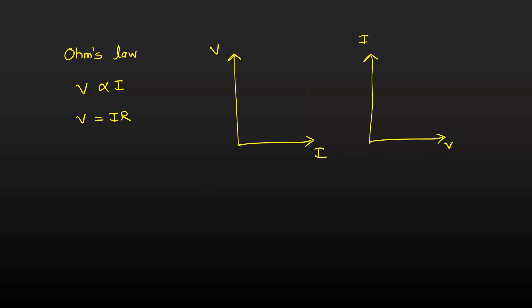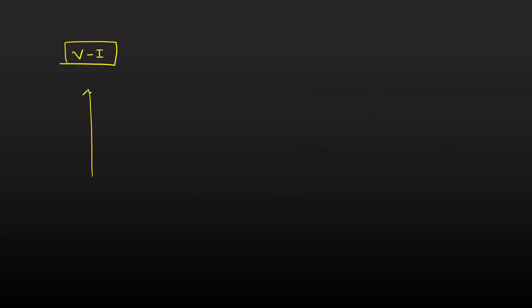Let's understand the properties of these two graphs. For a V versus I graph, voltage is on the y-axis and current is on the x-axis. There is a linear graph, which means it follows Ohm's law. If I choose one point on this graph, the x-coordinate is current and the y-coordinate is voltage. I draw lines parallel to the y-axis and parallel to the x-axis. Can I get the slope from this graph?